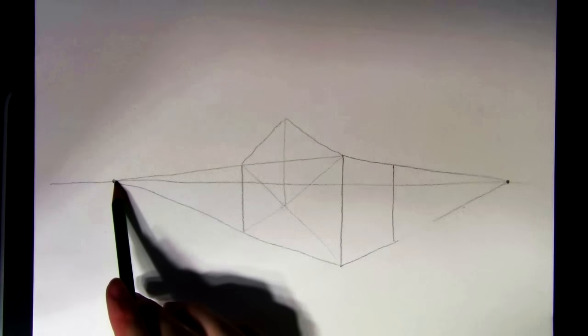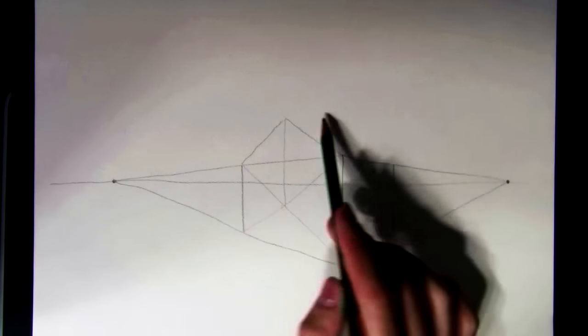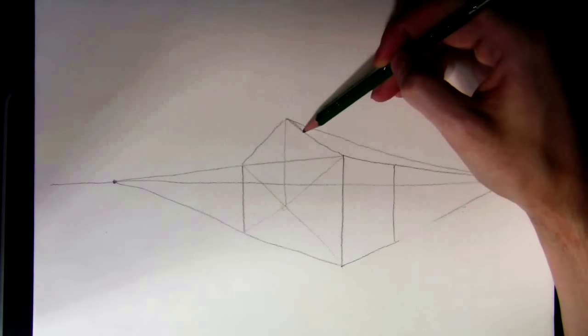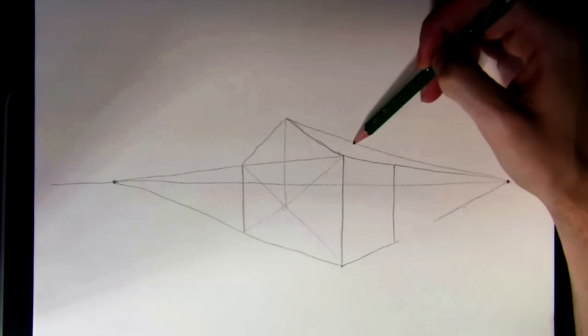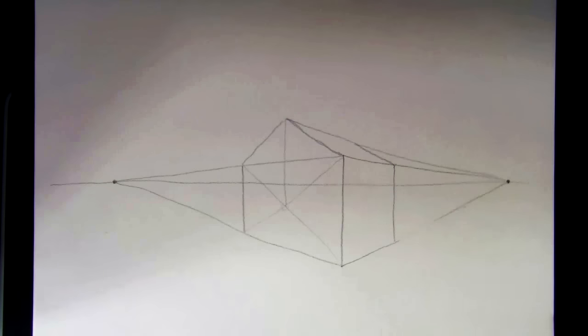And now, you don't have to draw to this vanishing point because the roof is going back this way. So you draw to this vanishing point. And then parallel with this line here, you draw one from this point and make it parallel. And there's the roof.